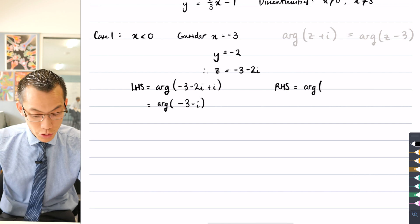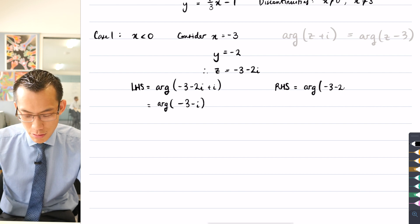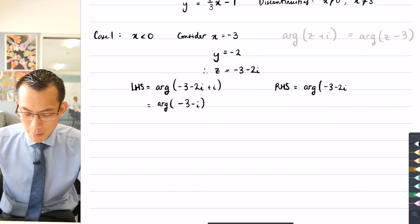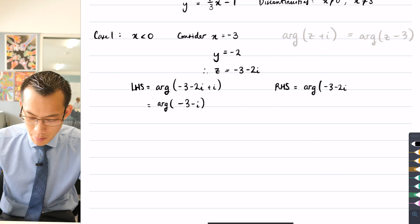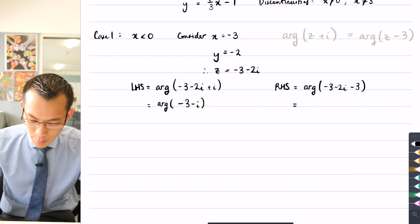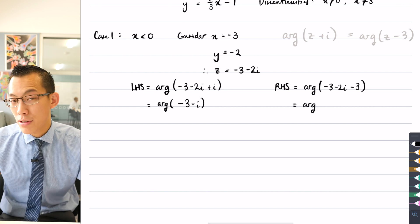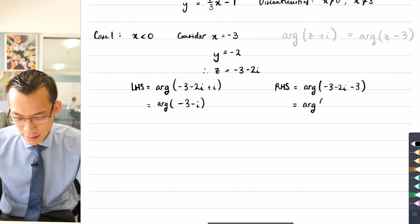I want argument of z, which we said was minus three minus two i. But you can see I'm going to be not adding i. I'm going to be subtracting three. So that gives me this minus three. And when I simplify on the right-hand side, you can see it's the real terms that are going to do a bit of collecting in here. So I get minus six minus two i.